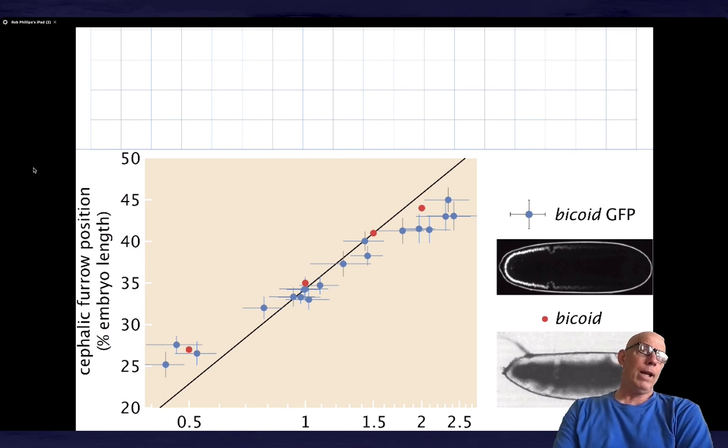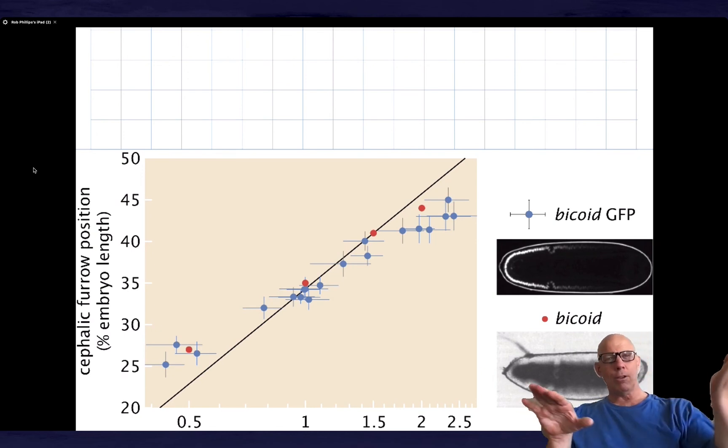The data is demanding us to do better. And in a way, if you like, we could say that the naive model falls short, and now it forces us to think hard about what the next steps might be, which is that there's a second gradient coming from the other end, just to give you one example.